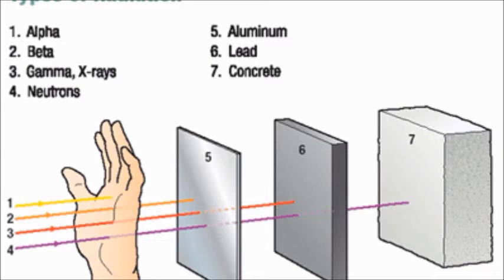This diagram clearly shows the three different types of radiation: alpha, beta, and gamma. It shows that alpha rays won't travel through very much, beta rays are stronger and will travel through more than alpha rays, and gamma rays, being the strongest, will travel through the most amount of material.